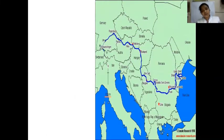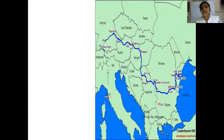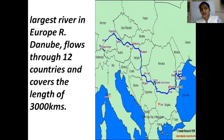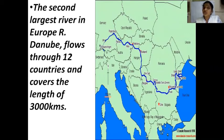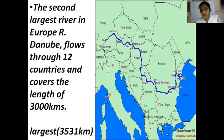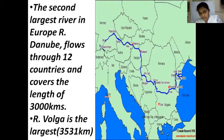In Europe, there are two largest rivers, but we will learn about only one — that is the second largest river, the blue line that you can see. This is River Danube, the second largest river in Europe. It flows through 12 countries and covers a length of 3,000 kilometers. The first largest river in Europe covers 3,531 kilometers, but we learn about River Danube because it flows through 12 countries.